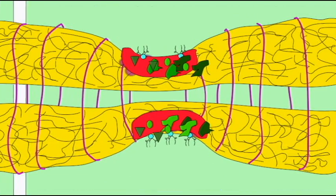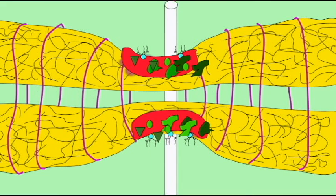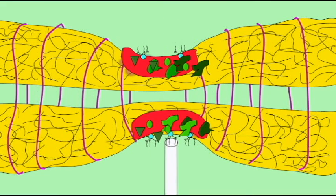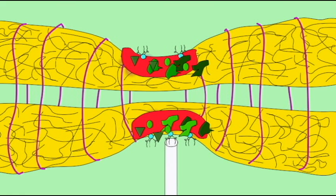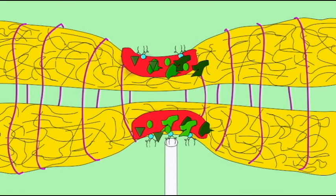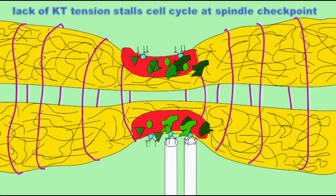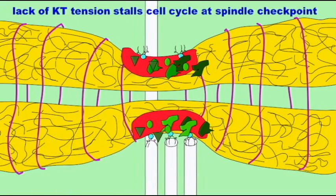If the daughter cells receive the inappropriate number of chromosomes, this would detract from their ability to perform normal functions. Also, this would potentially lead to cancer. An abnormal number of chromosomes is one of the factors in promoting cancerous cell growth.